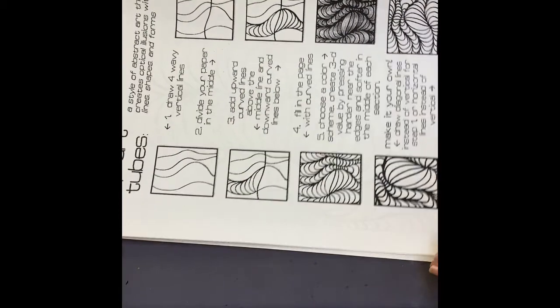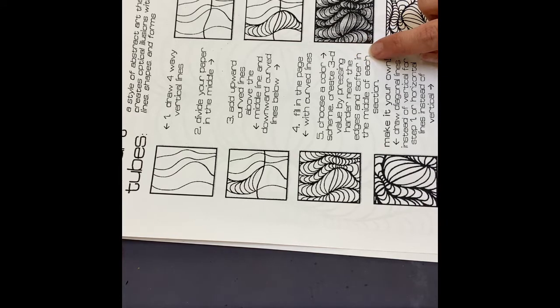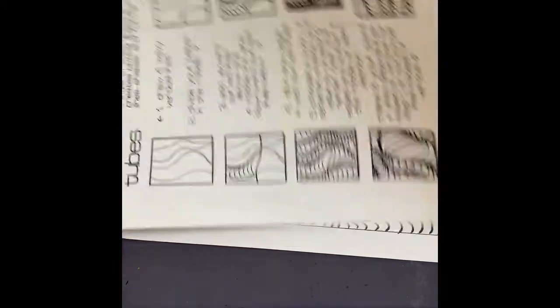Okay, so after we have filled in the page with curved lines, it says choose a color scheme, create 3D value by pressing harder near the edges and softer in the middle of each section.